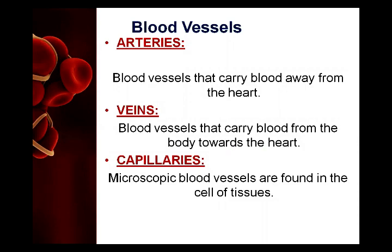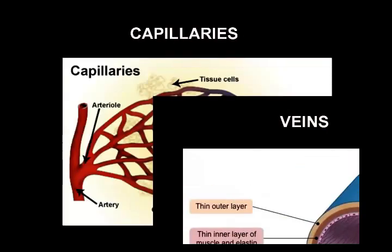Capillaries are microscopic blood vessels found in the tissues. The walls of capillaries are made up of a single layer of flattened cells called endothelium. Capillary walls are partially permeable - semipermeable - meaning they can transport nutrients by diffusion. Capillaries originate from arterioles and venules, and they increase the surface area for exchange of substances between blood and tissues.